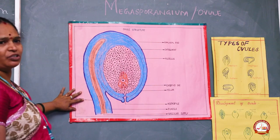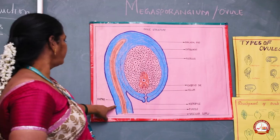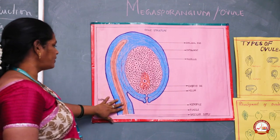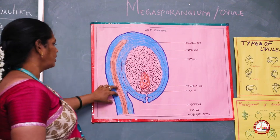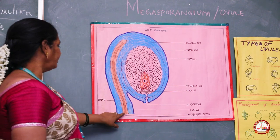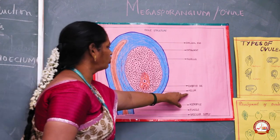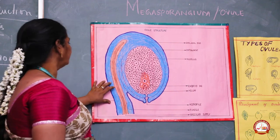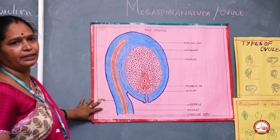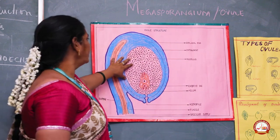The ovule is the part where, after fertilization, it becomes a seed. The ovule comprises two important parts: the stalk and the body. The stalk of the ovule is also called the funicle or funiculus. The body of the ovule is attached at the end of the funicle to the placenta of the flower. The junction between the funicle and the body of the ovule is called the hilum. The centre part — the body of the ovule — is comprised of a large amount of reserved food material, which we call the nucellus. It is not nucleus; it is nucellus.